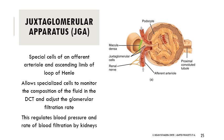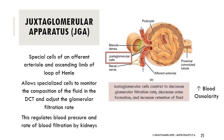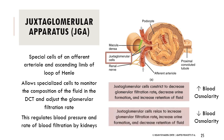The juxtaglomerular cells respond to blood osmolarity. When blood osmolarity is high, those cells constrict to decrease the glomerular filtration rate, decreasing urination and increasing fluid retention. Conversely, when blood osmolarity is low, the cells relax, increasing glomerular filtration rate and urination so that blood osmolarity proportionally increases. Both mechanisms restore homeostatic balance of blood osmolarity.